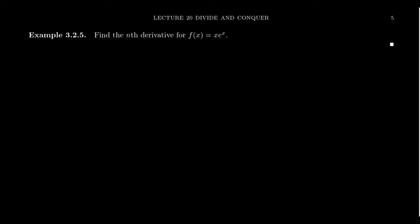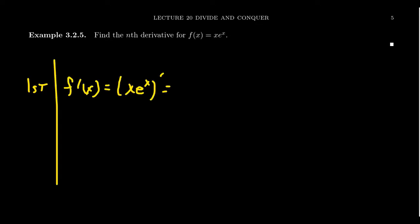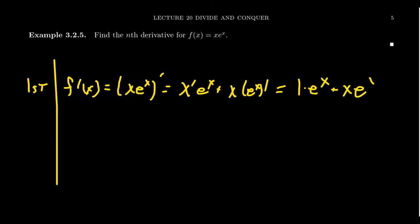As another example, let's find the nth derivative of f(x) = x·eˣ. Starting with the first derivative using the product rule: f'(x) = (x)'·eˣ + x·(eˣ)' = 1·eˣ + x·eˣ. Factoring out eˣ gives (x + 1)eˣ.